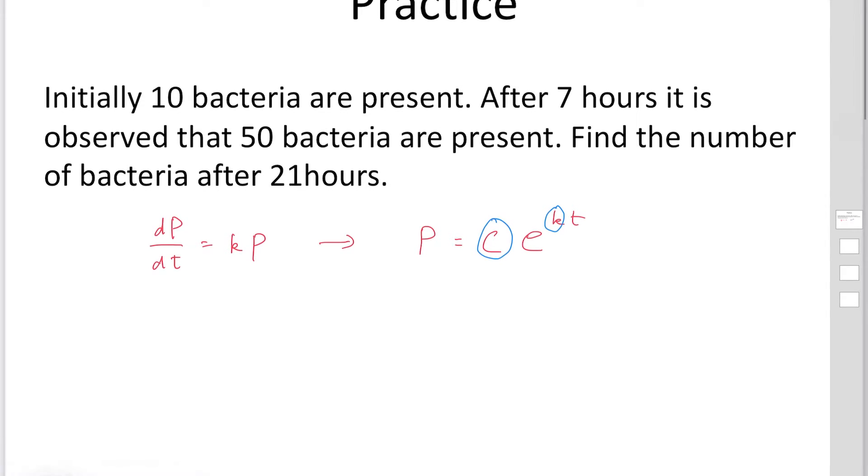One of the information: initially, 10 bacteria are present. So this means at t equals 0, P is 10 bacteria.